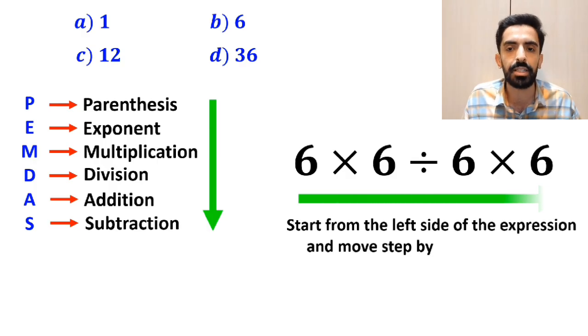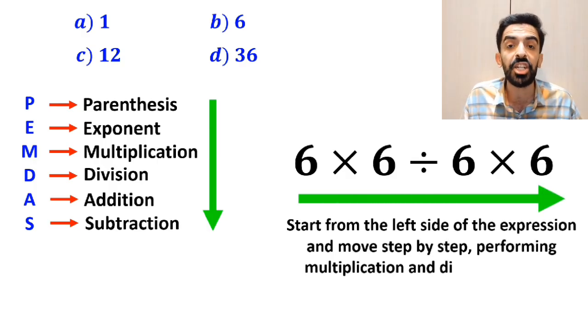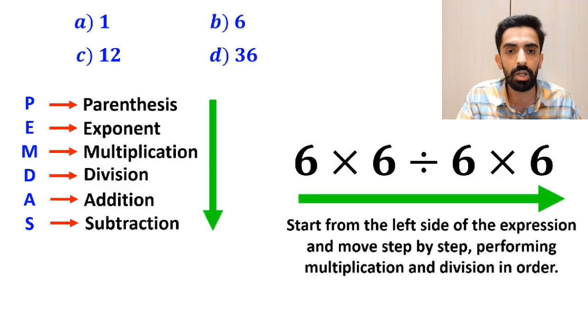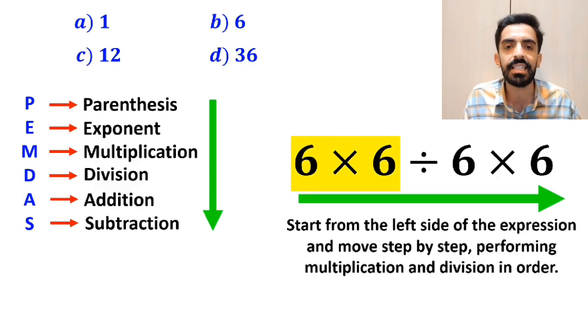In this case, the best thing to do is to start from the left side of the expression and move step by step, performing multiplication and division in order. So first we perform the multiplication between 6 and 6, which I have highlighted in yellow.